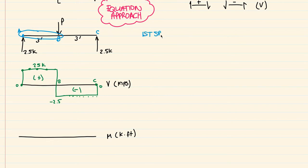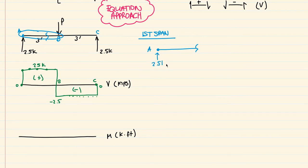For that first span, I'm going to take a random cut somewhere between A and B — it doesn't matter where, as long as it's between points A and B, because that's what's going to represent our internal moment on that span. So that first cut would look something like this. Here's point A, we have our 2.5 kips here, and we have our internal moment here, which I'll call M of x, because this is going to be a function of x. And x is going to be taken from point A to the right. Any point along here is just a distance x from point A. I can sum moments about this point, which I'll call O, at a distance x from A.